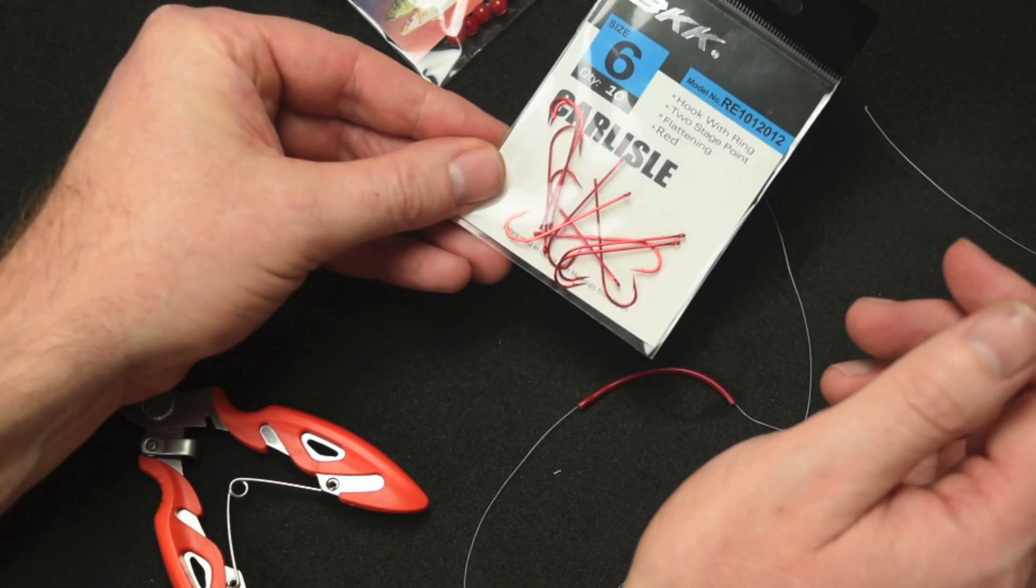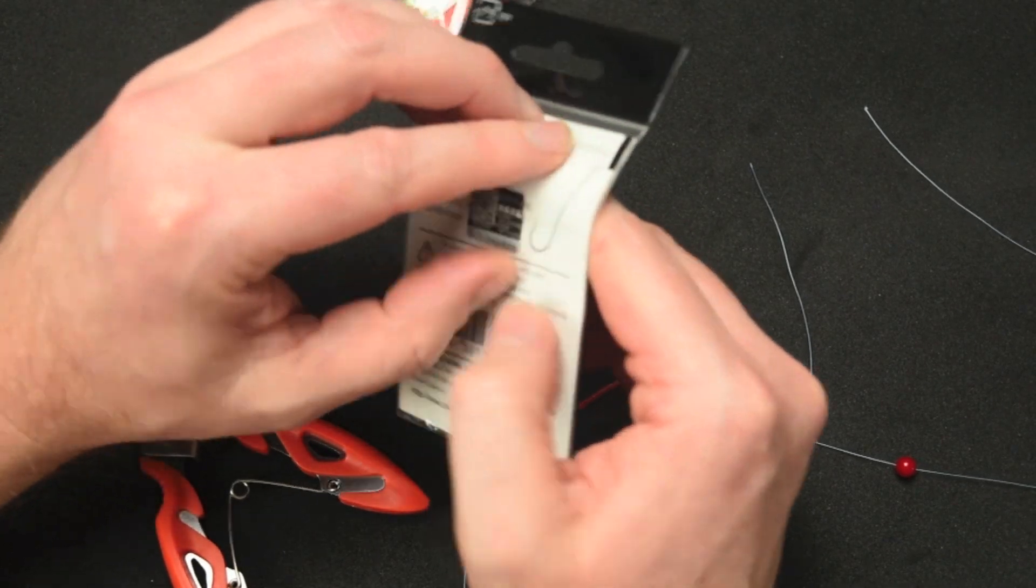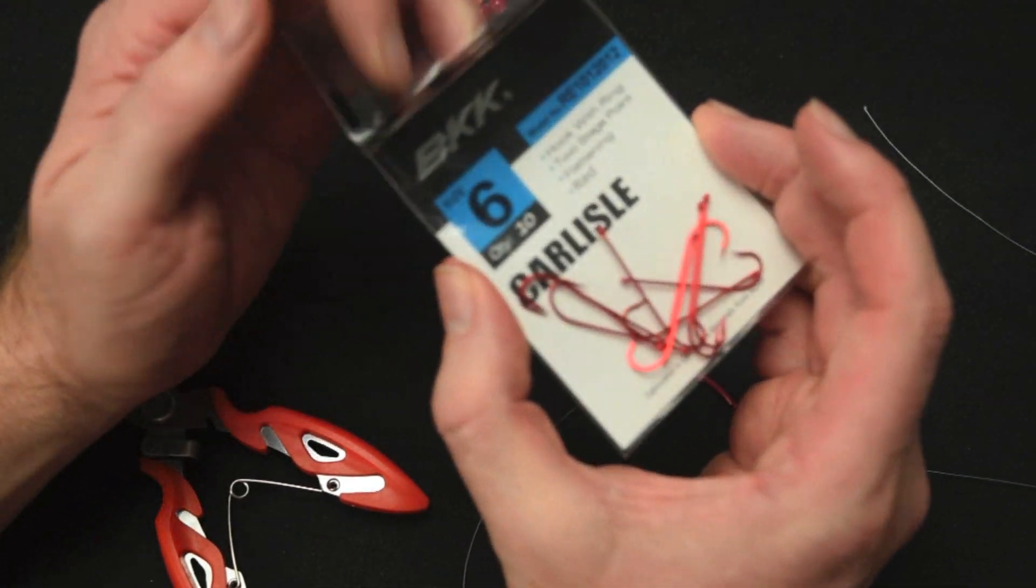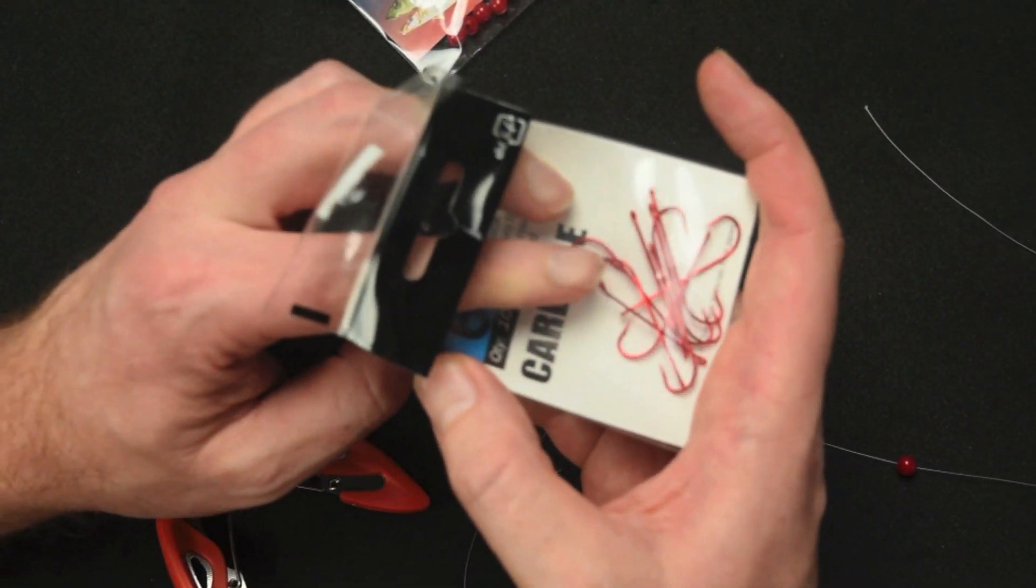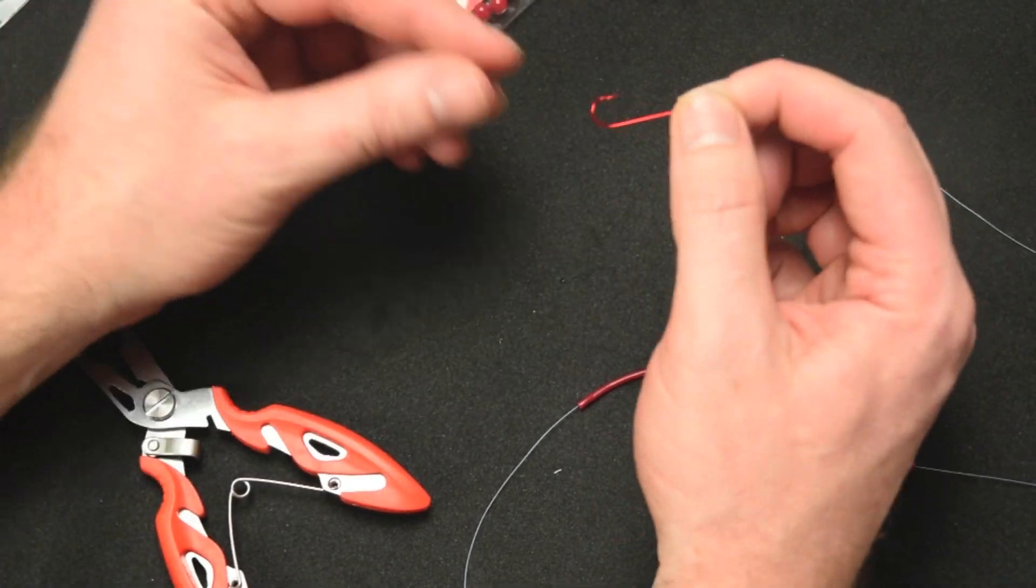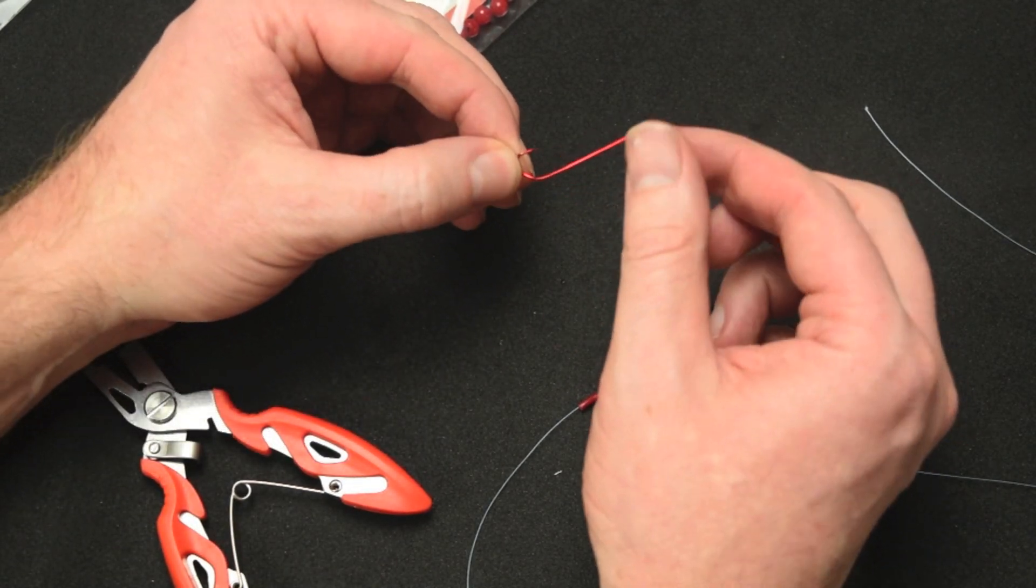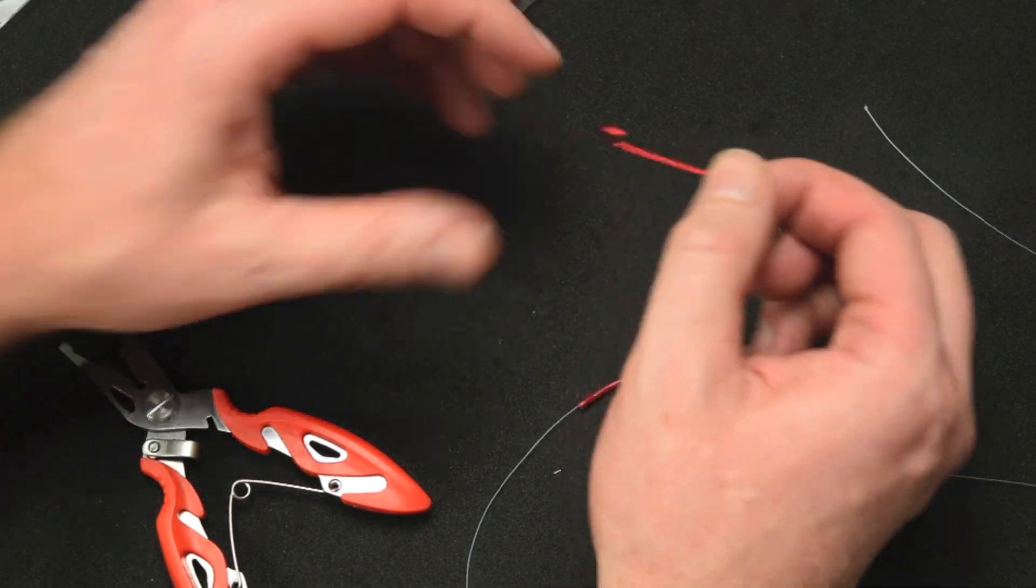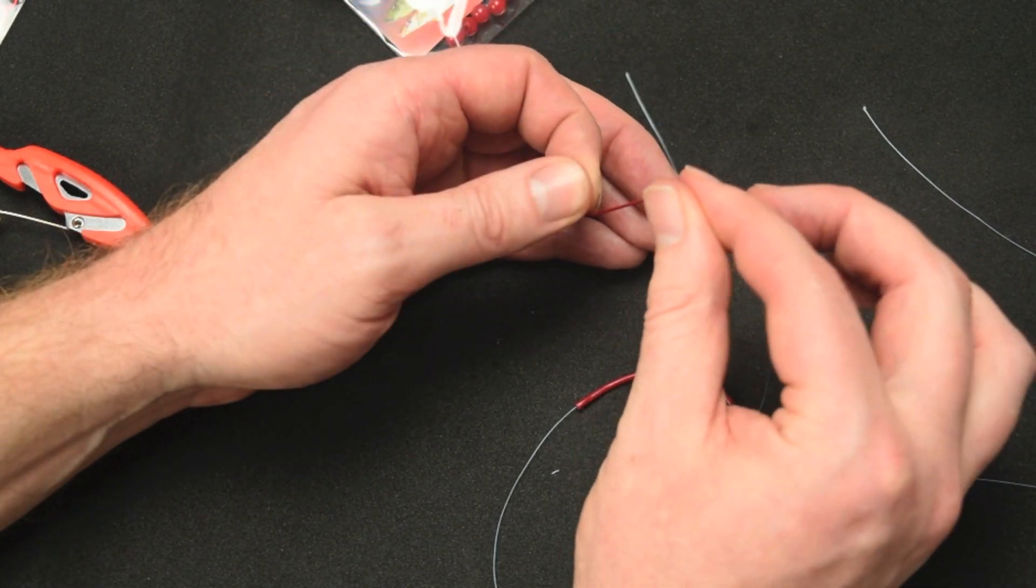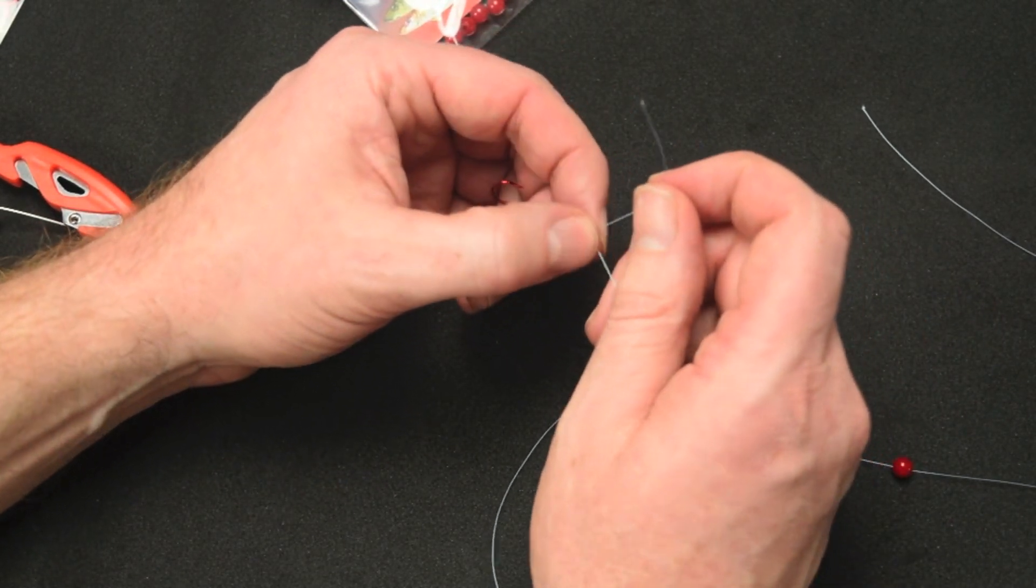Second step is we want to grab a bead and a bit of Lumo tubing or red tubing in this case. I like to use about that length there. Give it a trim. Now thread your bead on. Thread your tubing on. Pretty simple. Then what we're going to do is grab one of these size 6 hooks, a little long shank. These hooks are great for holding worms because obviously they're a long shank.